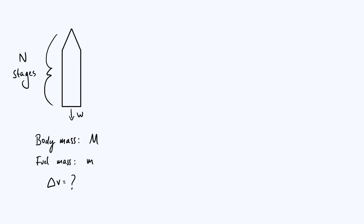Hello everyone. In this video we're going to find the delta V value — in other words the boost in speed gained by a rocket which is split into an arbitrary number of stages.